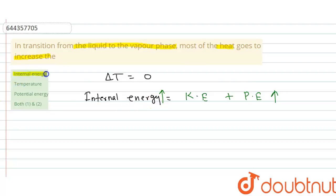So the correct options are internal energy and potential energy. I hope you have understood the explanation. Thank you.